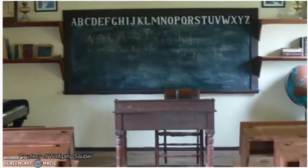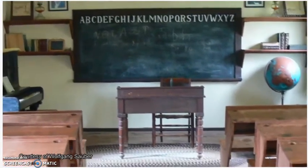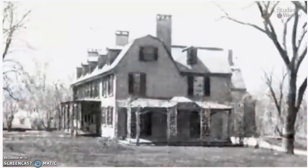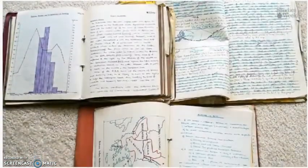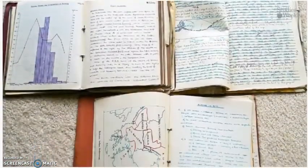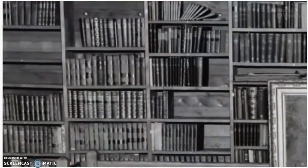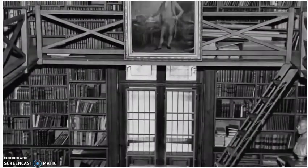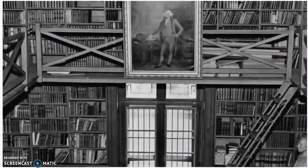Abigail was born in a time when most women were not considered intelligent enough to learn. Women were not allowed to attend school, own property, or vote. But Abigail's mother taught her reading, writing, and arithmetic. Abigail's father had a large library, and Abigail read as many books as she could to educate herself in various academic subjects.